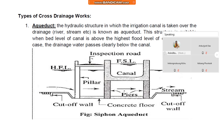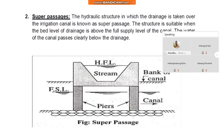In this figure you can see the siphon aqueduct. Next, number two is super passage. The hydraulic structure in which the drainage is taken over the irrigation canal is known as super passage. The structure is suitable when the bed level of drainage is above the full supply level of the canal. The water of the canal passes clearly below the drainage. In this figure you can see the super passage structure.